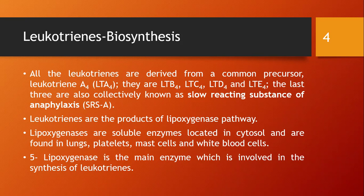Leukotrienes are products of the lipoxygenase pathway. The enzyme lipoxygenase converts arachidonic acid into leukotrienes, just as cyclooxygenase gives rise to prostaglandins. Lipoxygenases are soluble enzymes located in the cytosol, found in lungs, platelets, mast cells, and white blood cells.